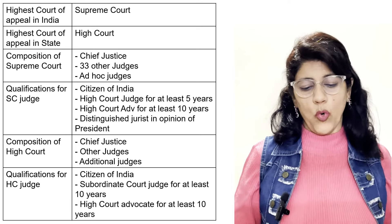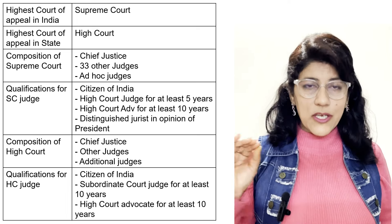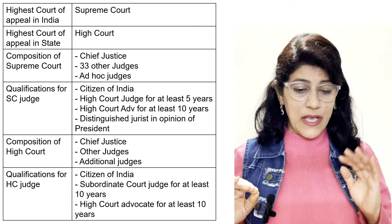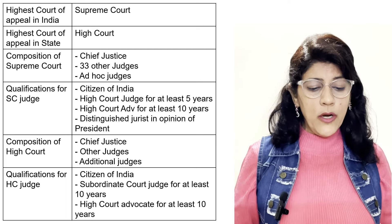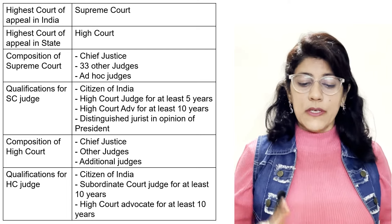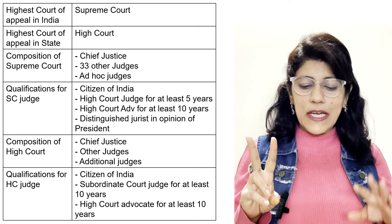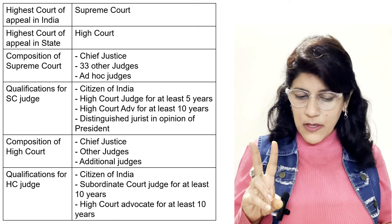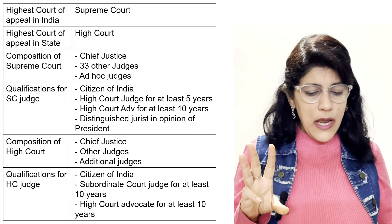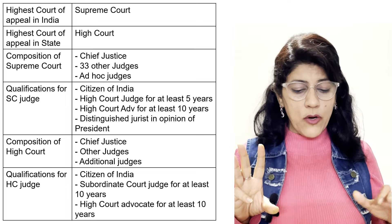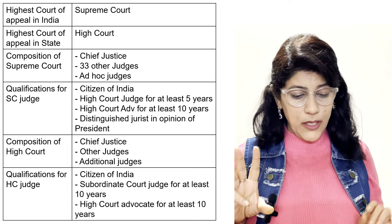Composition of Supreme Court: Chief Justice, 33 other judges, and ad hoc judges at some times. Qualifications for Supreme Court judges: citizen of India, High Court judge for at least 5 years, High Court advocate for at least 10 years, and distinguished jurist in the opinion of the President.